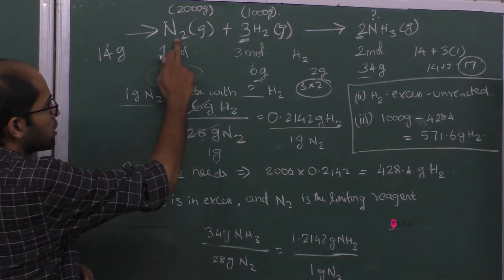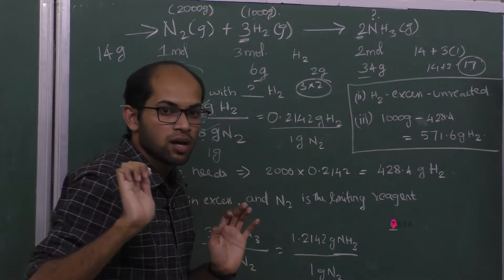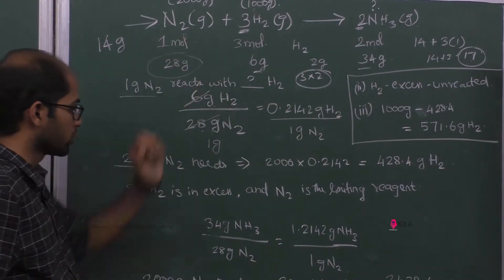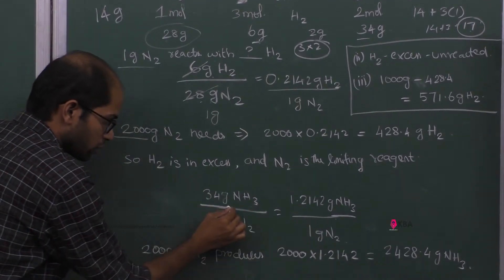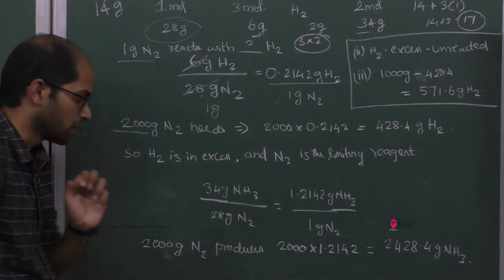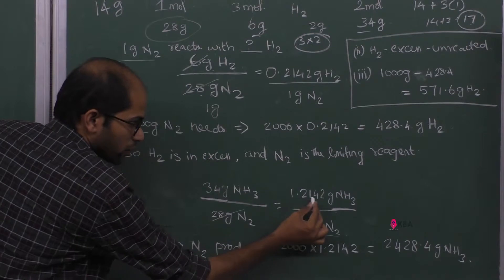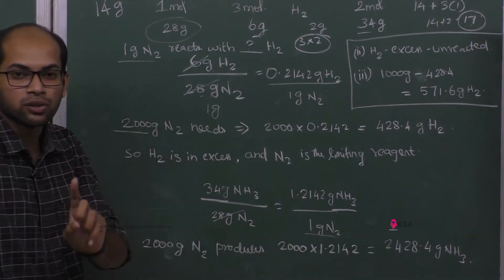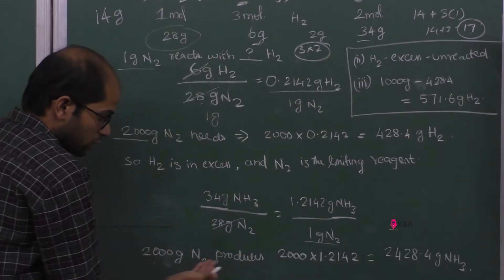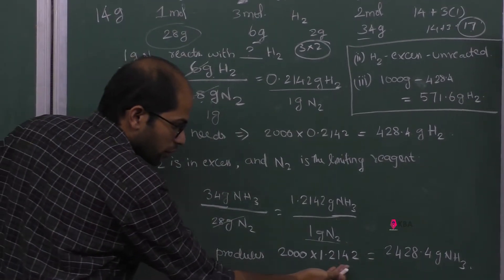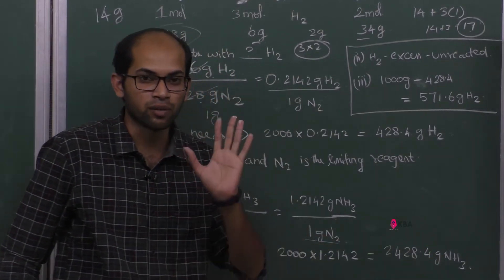Since 28 grams of nitrogen produces 34 grams of ammonia, 1 gram of nitrogen produces 34 ÷ 28 = 1.2142 grams of ammonia. Therefore, 2000 grams of N2 produces 2000 × 1.2142 = 2428.4 grams of ammonia.